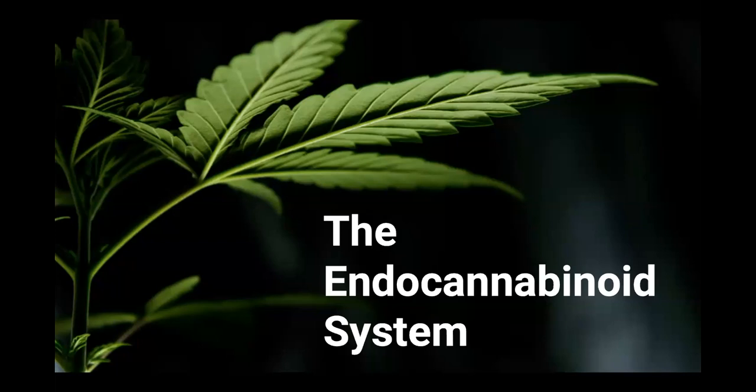A cannabinoid is a compound that interacts with the ECS via receptor sites. There are two receptor sites in the system: cannabinoid receptor one, called CB1, and cannabinoid receptor two, referred to as CB2.